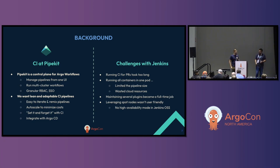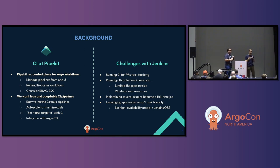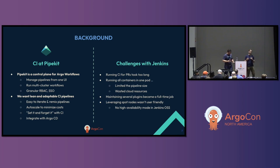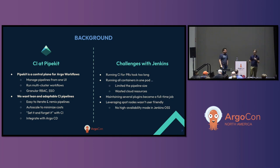We faced a lot of similar challenges at PipeKit. As a startup, it was mostly focused on how do we have a lean and adaptable CI approach. Since we're a control plane for Argo workflows, our value proposition is delivering a centralized place where customers can manage their workflows and any tools or integrations. We manage multi-cluster workflows and integrate with SSO providers for RBAC. As we shipped more integrations and features, our CI quickly expanded and this led to some challenges. It was hard to iterate and remix pipelines. We wanted to autoscale more to minimize costs, and from a maintenance standpoint, we wanted a CI approach that was more set-it-and-forget-it. And since we were going to be deploying with Argo CD, we wanted a tool that would easily integrate with Argo CD rollouts and events.